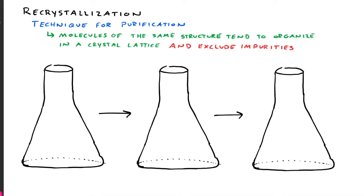As the name suggests, in recrystallization, we are going to form crystals. The reason it's called recrystallization is because most solids are already in a crystalline form. We are going to destroy those crystals and then reform them. And during that process, hopefully, we will purify our compound. It's a very common technique used for the purification of both organic and inorganic compounds. The principle behind recrystallization is that molecules of the same structure tend to organize in a crystal lattice with themselves, with the same molecules. And during that process, they exclude impurity molecules that don't match the crystal lattice.